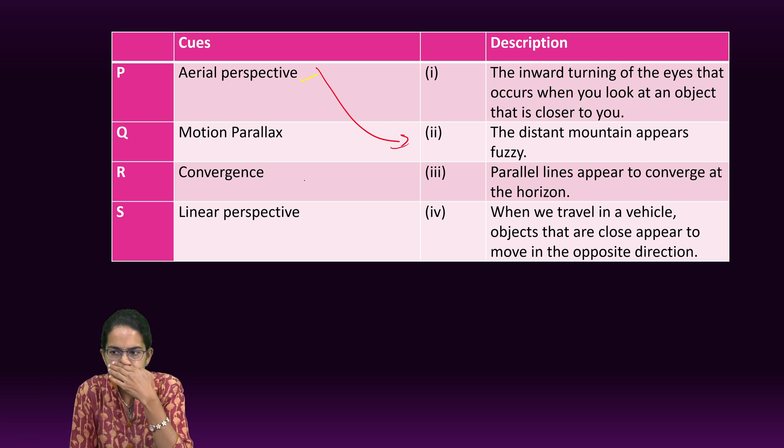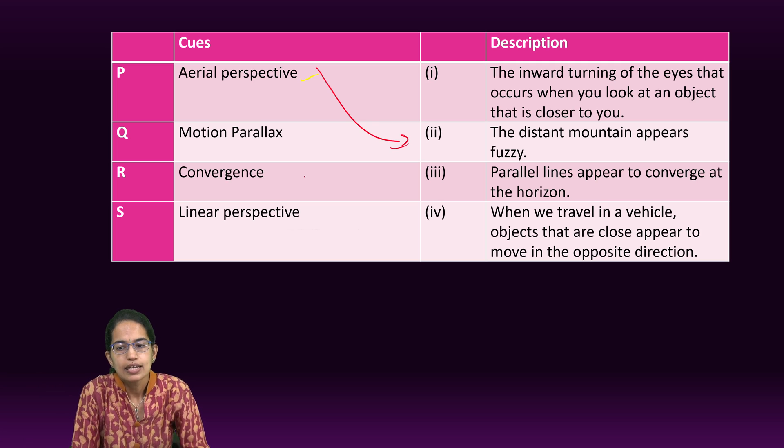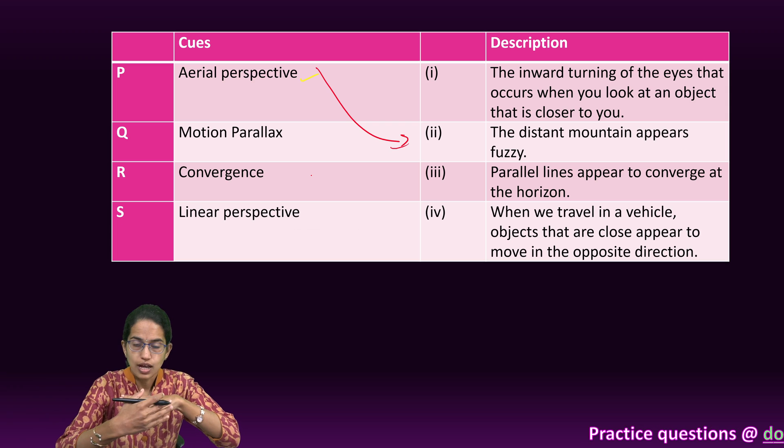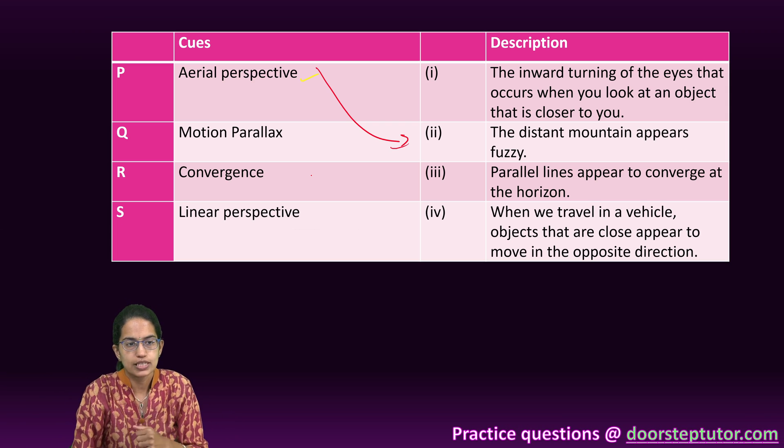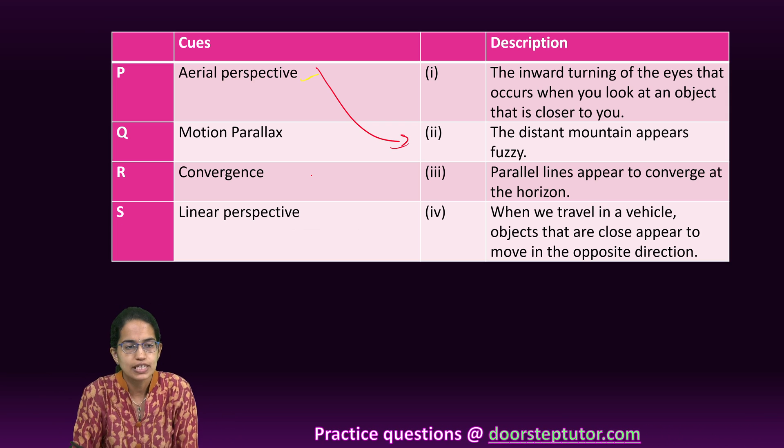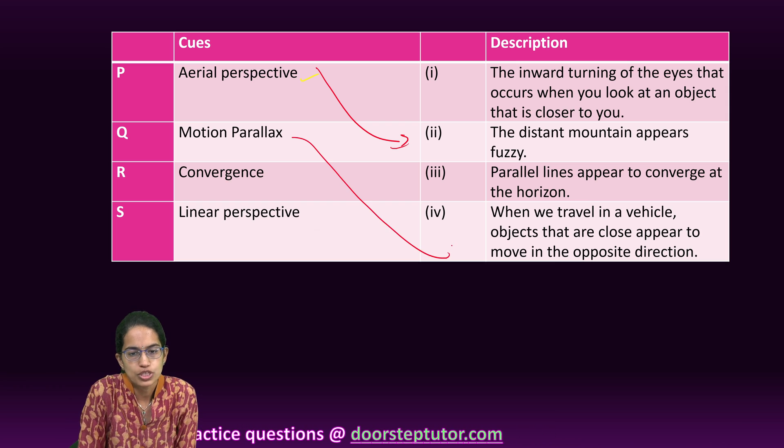In motion parallax, we basically see that the objects which are close to us appear to move in an opposite direction and that's commonly seen when you are traveling in a train. We feel this motion parallax.